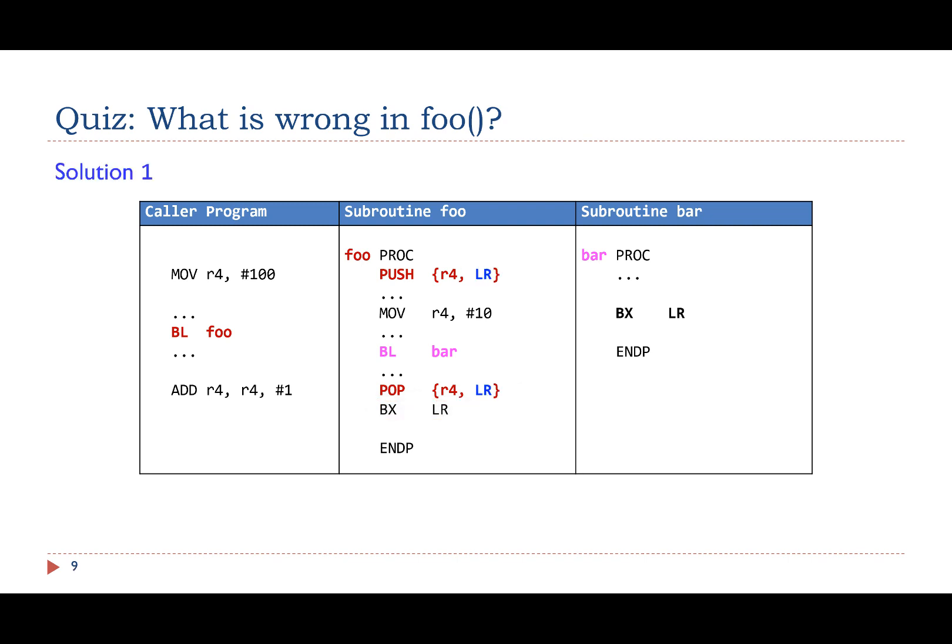Here is one solution to fix the problem. The subroutine should preserve the link register on the stack and recover LR's original value before it calls BX LR. Here is another solution. Rather than recovering LR's original value, we can pop LR's original value directly to the program counter, PC.